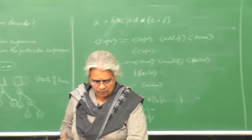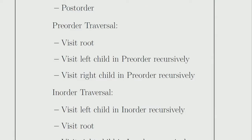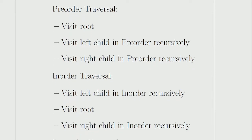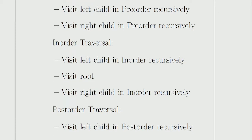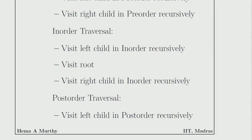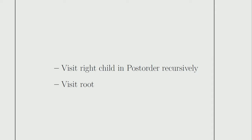The definitions are given here. Pre-order traversal says: visit the root, then visit the left child in pre-order recursively, then visit the right child in pre-order recursively. In-order traversal says: visit the left child in in-order recursively, visit the root, visit the right child in in-order recursively. Post-order traversal says: visit the left child in post-order recursively, visit the right child in post-order recursively, then visit the root. Everything has to be done recursively.